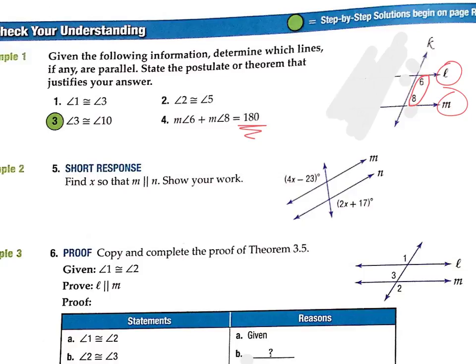All right, number 5. This is more of an application. So it says find X so that they would be parallel. So if these are going to be parallel, then these angles are alternate exterior. They're both on the outside on opposite sides. So those have to be equal. So we're doing the problems exactly the same way we did in lesson 3.2.